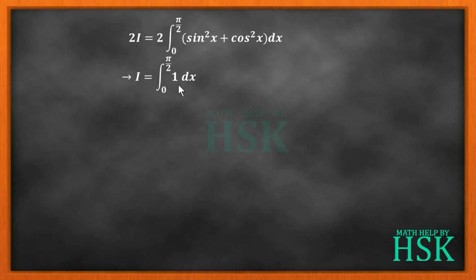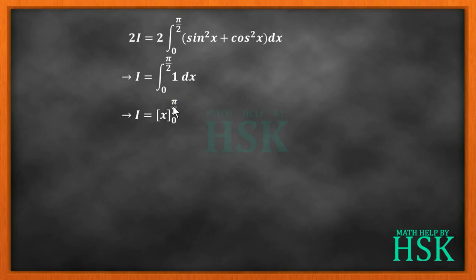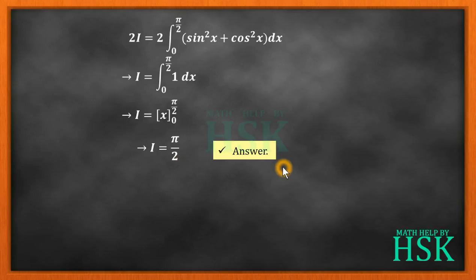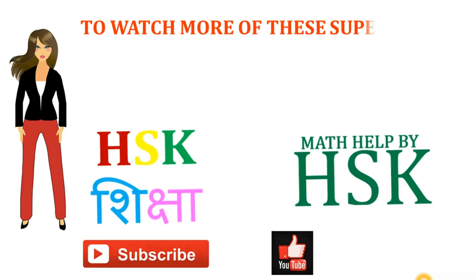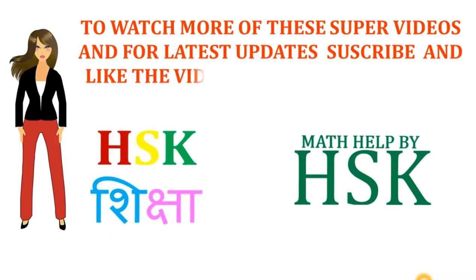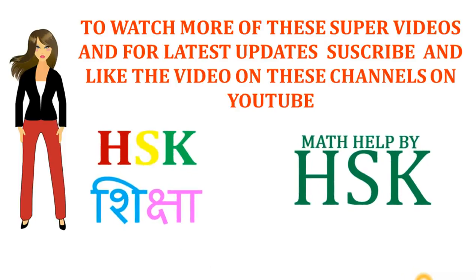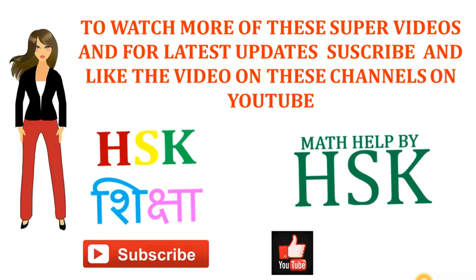Now the problem becomes straightforward. The integration of 1 is x, evaluated from 0 to pi/2, giving pi/2 minus 0. So I equals pi/2, which is the required answer. To watch more of these videos and for the latest updates, subscribe and like the videos on the YouTube channels HSK Shiksha and Maths Help by HSK. Thank you.